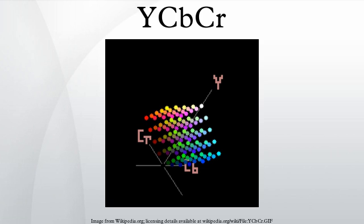Y' is the luma component, and Cb and Cr are the blue difference and red difference chroma components. Y' is distinguished from Y, which is luminance, meaning that light intensity is non-linearly encoded based on gamma-corrected RGB primaries.